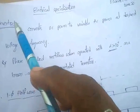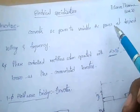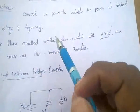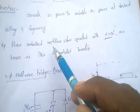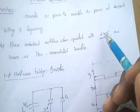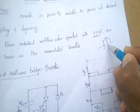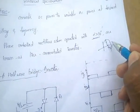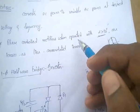An inverter converts DC power to AC power. In case of power-controlled inverters, they convert DC power to variable AC power at a desired voltage and frequency. Phase-controlled rectifiers, which convert AC to DC, when operated with firing angle alpha greater than 90 degrees (i.e., between 90 and 180 degrees), are known as line commutated inverters.